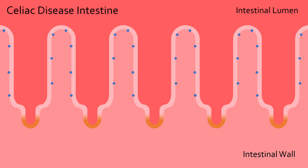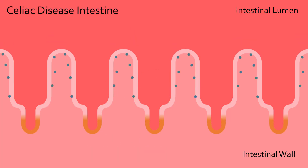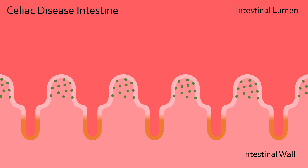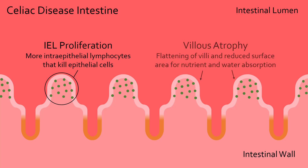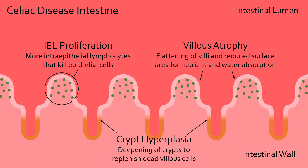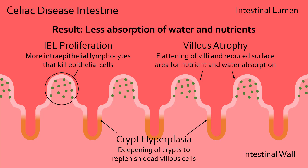In people with celiac disease, gluten initiates an autoimmune reaction that damages the intestinal wall. Intraepithelial lymphocyte numbers skyrocket and kill the epithelial cells, resulting in shorter and flatter villi, while crypts deepen as the intestine tries to replenish the dead epithelial cells. Now there is reduced surface area, meaning less nutrient absorption.